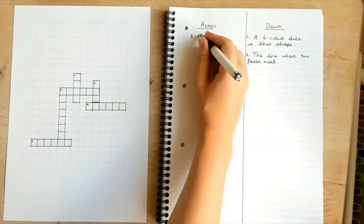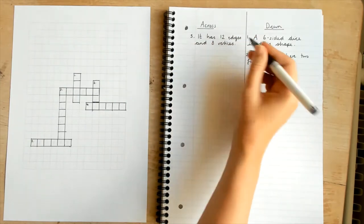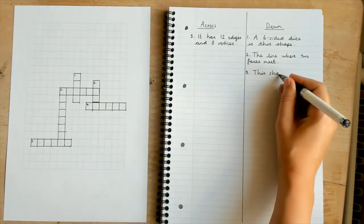Using their knowledge of the properties of 3D shapes, learners could give clues about the number of faces, edges, or vertices, or maybe a real-life object which always has this shape.